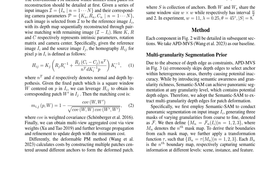By introducing semantic awareness and granularity richness, MSP-MVS aims to improve upon these limitations by utilizing multi-granularity segmentation edges for patch deformation. The proposed approach uses semantic SAM to conduct panoramic segmentation on input images, generating masks of varying granularities. These masks are then transformed to derive their boundaries, capturing semantic information at different levels such as scene, instance, and feature.